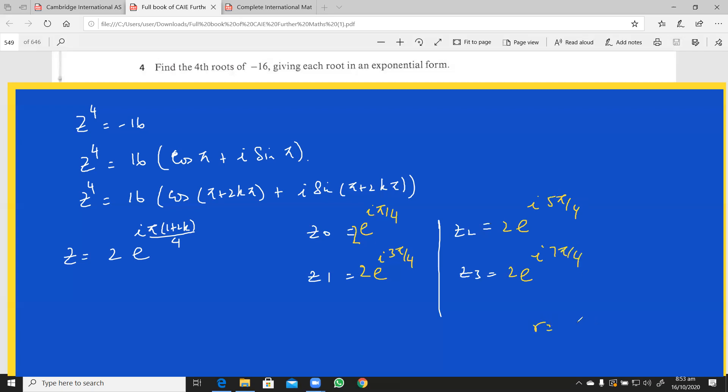And the r over here is e raised to the power iota π by 2. That is the common ratio of this geometric progression.